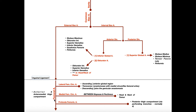The femoral artery obviously continues further down the thigh, and initially it gives off three branches: the lateral femoral circumflex artery, the medial femoral circumflex artery, and the profunda femoris artery, also called the deep artery of the thigh.